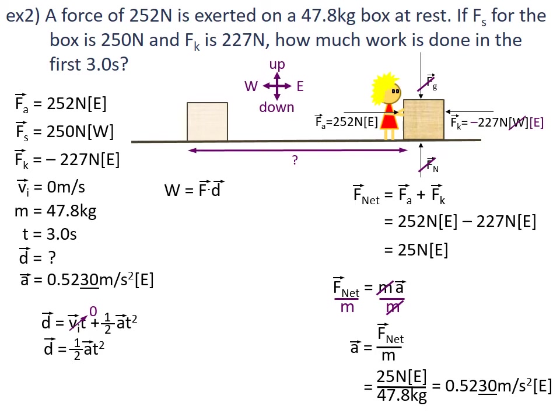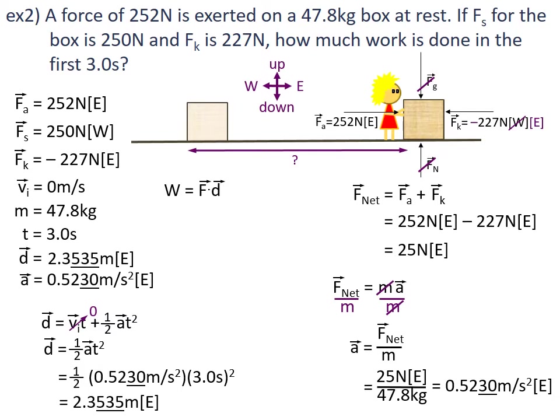Now I can sub in numbers and solve for the displacement. Displacement equals half times the acceleration of 0.5230 metres per second squared multiplied by the time of 3.0 seconds squared. The displacement of the box over the 3-second time period is 2.3535 metres east, and we can update our variable list.